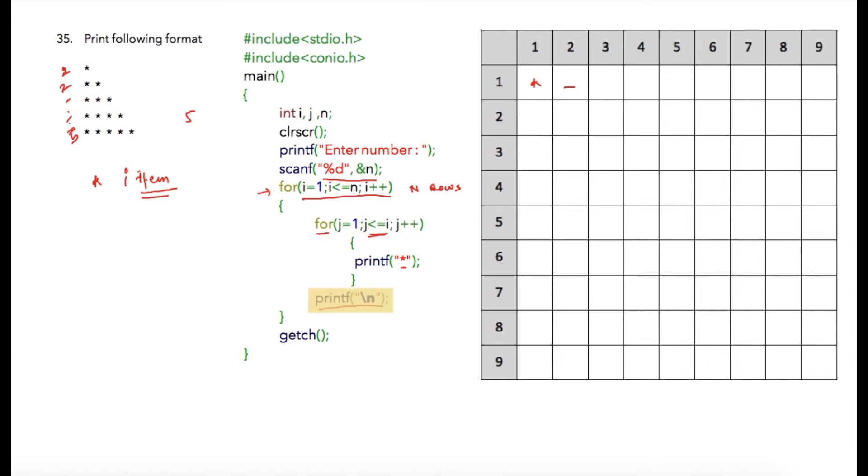On the next line I have written printf slash n, so the cursor will move to the next line because slash n is a newline character. After that, i will be incremented to two.